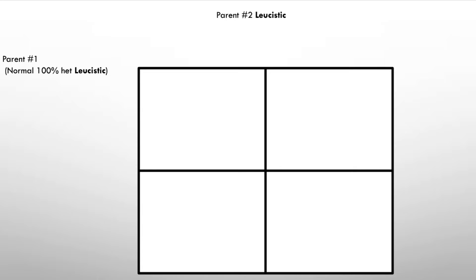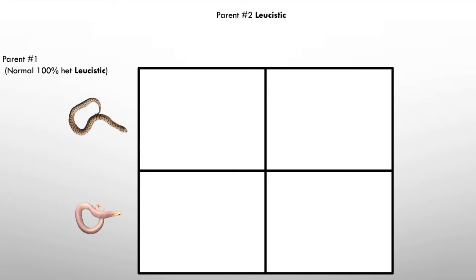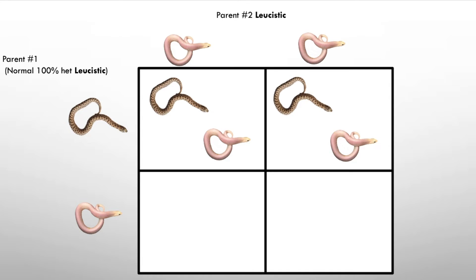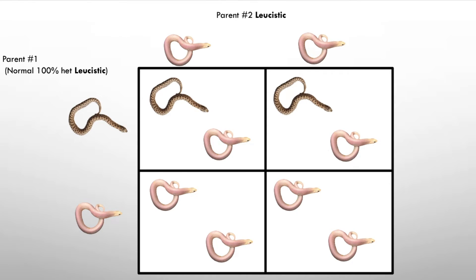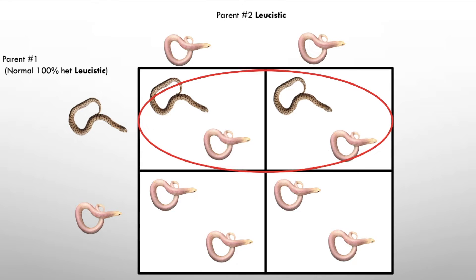Let's use Punnett squares to look at probabilities. Parent one is a normal but a carrier — a normal 100% het leucistic. Parent two is a visual leucistic with two copies. The results: 50% are normal 100% het leucistic — carriers — and 50% are visual leucistics with two copies of the gene.